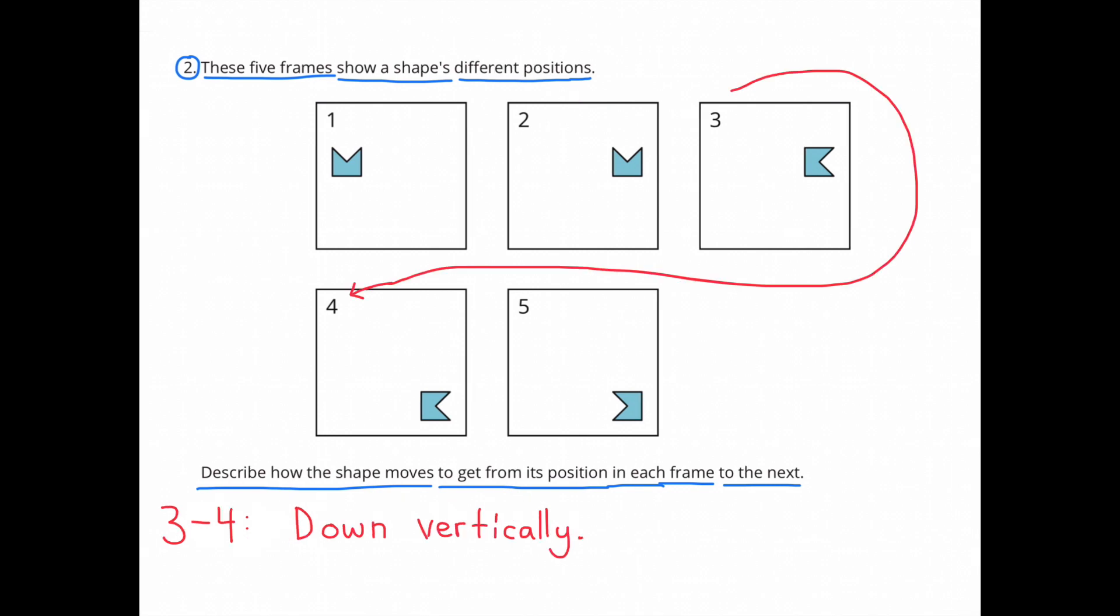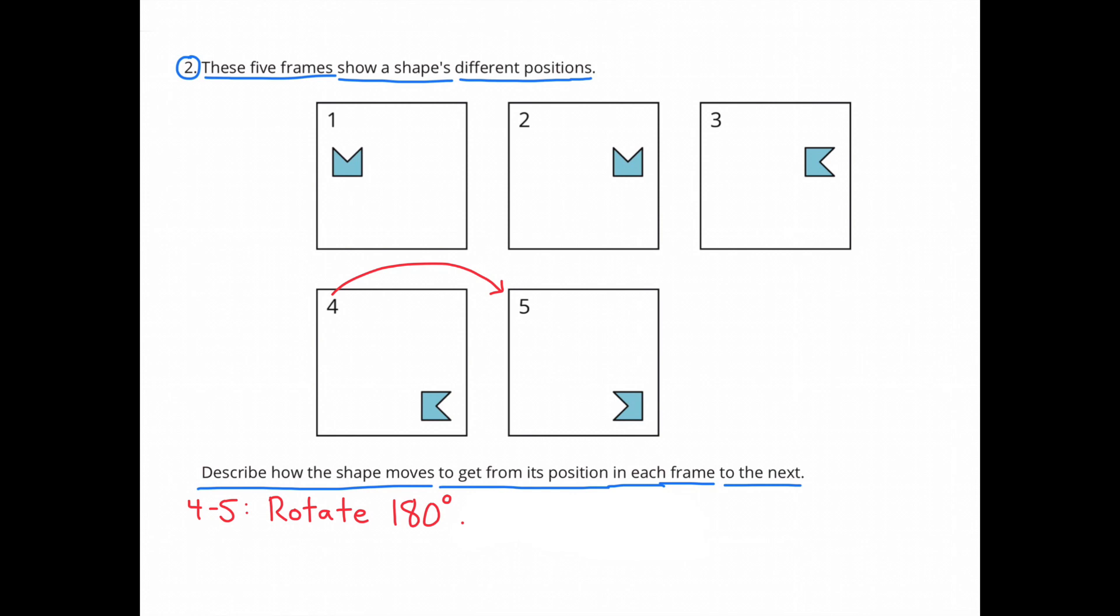From frame 3 to frame 4, the shape moved down vertically. From frame 4 to frame 5, the shape rotated 180 degrees.